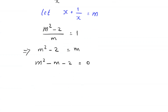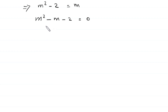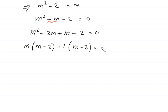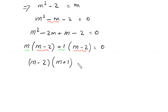Moving m to the left-hand side gives m squared minus m minus 2 is equal to 0. This is a factorable quadratic equation. We split negative m as negative 2m plus 1m, giving m times m minus 2 plus 1 times m minus 2 equals 0. Factoring out the common factor m minus 2, we get m minus 2 times m plus 1 equals 0.